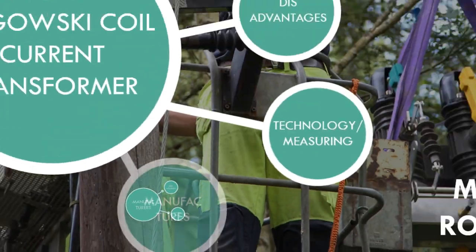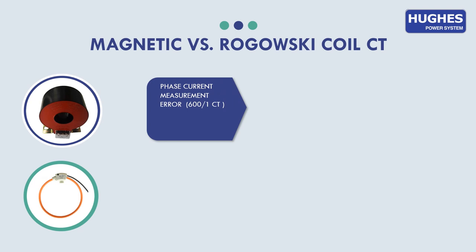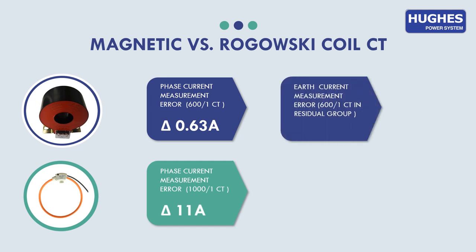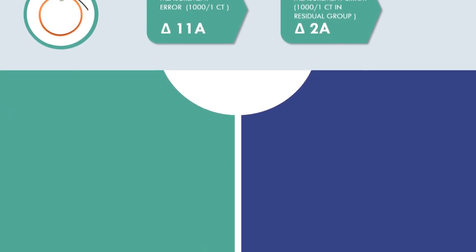Here you can see the results of the actual measurement performed in order to evaluate the measurement errors for both types. As you can see for magnetic current transformer, the phase current measurement error 600 to 1 CT was only 0.63 ampere. When in case of Rogowski coil, it was 11 ampere. Next is earth current measurement error 600 to 1 CT in residual group. For magnetic current transformer it was 0.1 ampere, and in case of Rogowski coil it was 2 ampere. This factor is very important, especially for isolated neutral type of network as almost 90% of the faults are below 2 ampere.